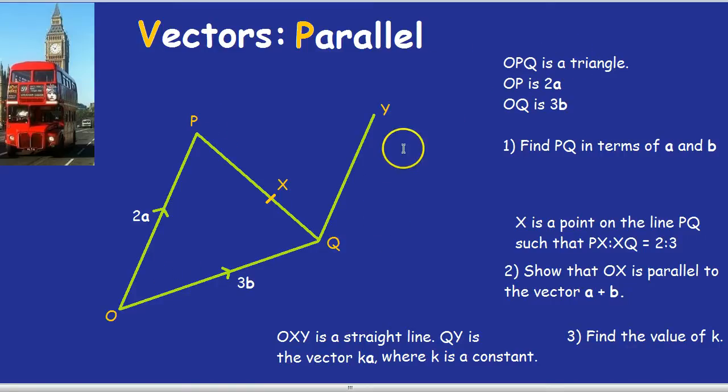OPQ is a triangle, OP is 2a, OQ is 3b. Find PQ in terms of a and b.